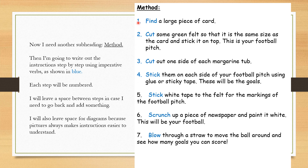I'm also going to number my steps — one, two, three, four and five — so that it's easy to follow, because your instructions are really for somebody else to produce the thing that you would like them to make. In your case it's going to be a bow and arrow.